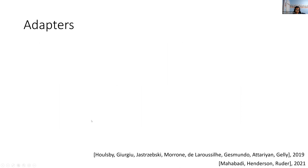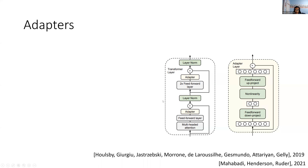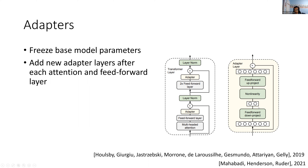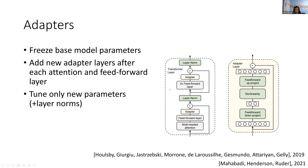Adapters were introduced by Houlsby et al. in 2019, and they're a type of way of tuning far fewer parameters in a transformer architecture. This is a transformer layer with the addition of adapter modules — one after the attention layer and one after the feed-forward layers. What you're going to do when using adapters is freeze the base model parameters except for the layer norm parameters, and add new adapter layers which contain far fewer parameters, just after each attention and feed-forward layer. You only tune a small number of new parameters, and it turns out you get pretty much comparable accuracy to training all parameters, even though you're tuning about 100 times fewer.